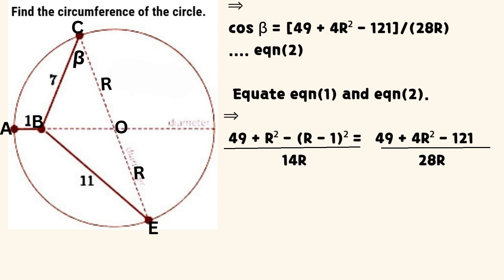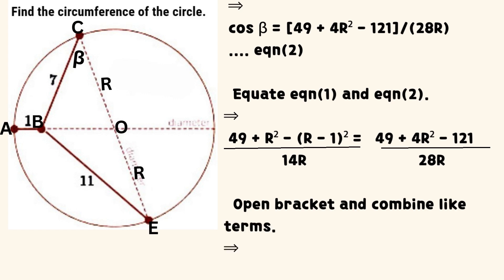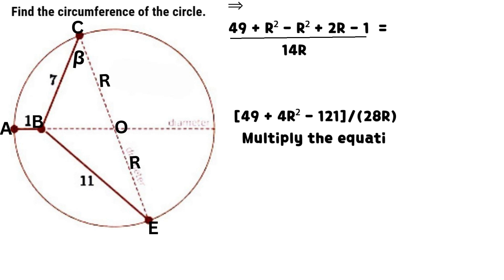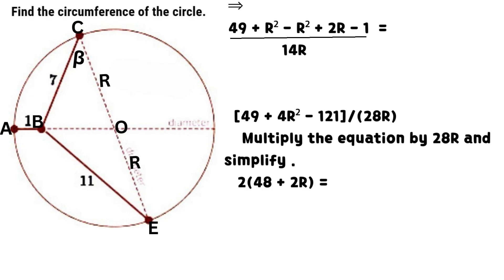Now equate equation 1 and equation 2. It signifies that the sum of 49 and the square of R minus the square of (R minus 1), all divided by 14 times R, equals the sum of 49 and 4 times the square of R minus 121, all divided by 28 times R. Open brackets, combine like terms, multiply the equation by 28R and cross multiply. Simplify and we have that the product of 2 and the sum of 48 and 2 times R equals 4 times the square of R minus 72.